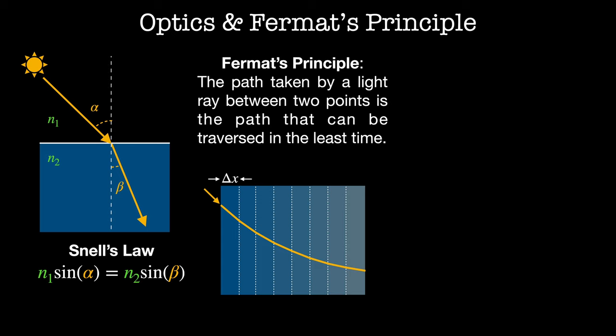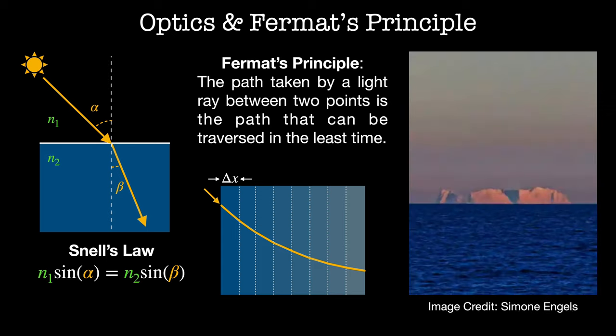All mirages are the result of bending light rays. This is an image captured by Simone Angles of what appears to be an enormous iceberg in Vancouver Bay. It turns out that this is actually a superior mirage, which occurs when there's an inversion layer in the atmosphere. This is a rare event where a layer of warm air traps a layer of cold air under it. The difference in density of the layers of air causes the light rays to refract.